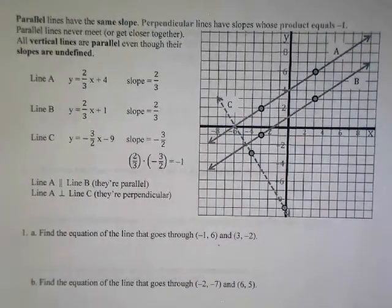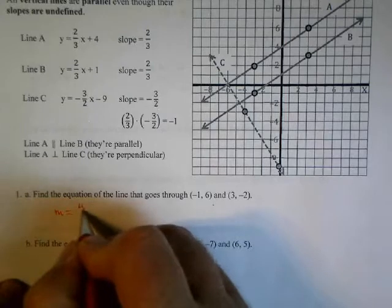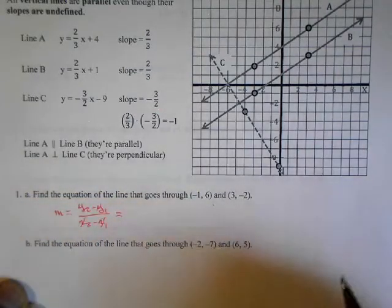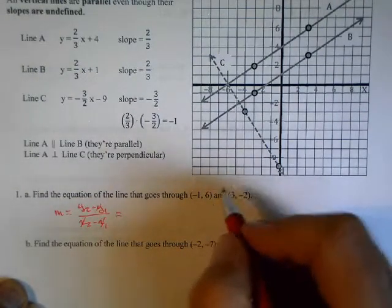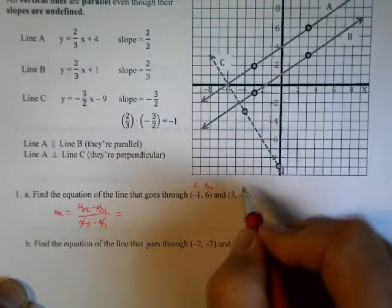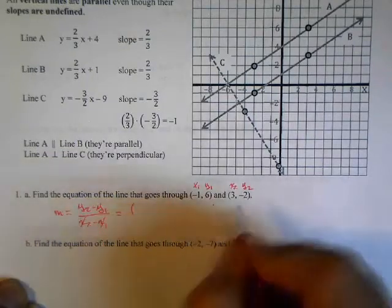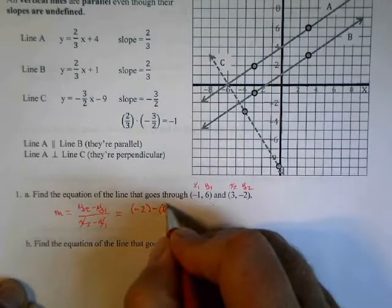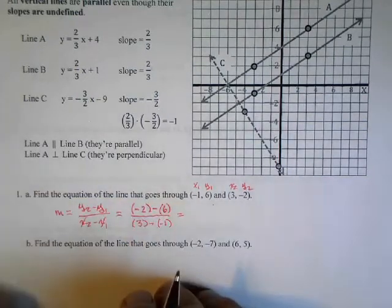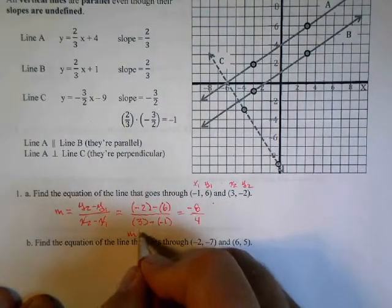We are going to find the equation of a line that goes through two points. First, we find the slope. I usually go left to right: negative two subtract [the other y-value] over three subtract negative one. The top part gives me negative eight, the bottom part gives me four, so my slope is negative two.